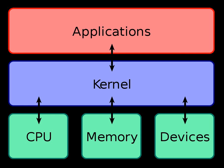Hybrid kernels are used in most commercial operating systems such as Microsoft Windows NT 3.1, NT 3.5, NT 3.51, NT 4.0, 2000, XP, Vista, 7, 8, 8.1, and 10. Apple's Mac OS uses a hybrid kernel called XNU, which is based upon code from OSF/1's Mach kernel and FreeBSD's monolithic kernel. They are similar to microkernels, except they include some additional code in kernel space to increase performance. These kernels represent a compromise implemented by some developers before it was demonstrated that pure microkernels can provide high performance.